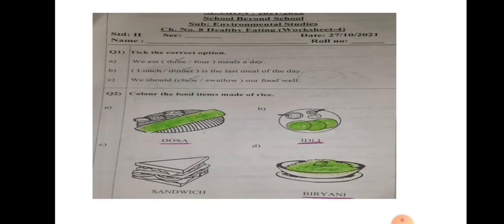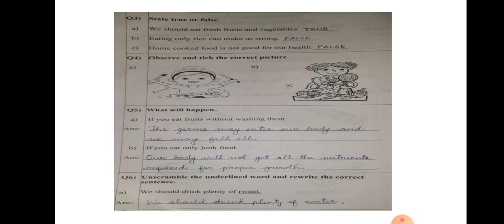Now, this is the worksheet. This is all been marked for you. I have colored also. All the answers are there. What will happen if you eat fruits without washing them? If you eat only junk food? Everything is given over here. If you find any difficulty, please you can take help of this worksheet, children.